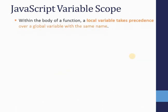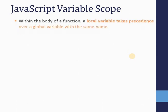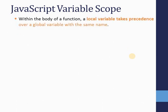Within the body of a function, a local variable takes precedence over a global variable with the same name. For example, if I declare a global variable called `variable1` and also declare a local variable within a function with the same name, then inside the function the local variable takes precedence — meaning within the function you are accessing the local variable, not the global one.